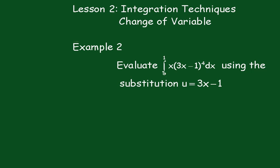Now I'll write the integral again. So we have i equals the integral from 0 to 1 of x times (3x minus 1) to the 4th dx.